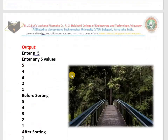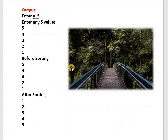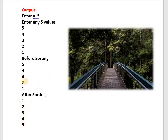See the expected output. Whenever we run the program, the software will ask you to enter the value of n — that means how many values you want to enter, say 5. Enter any 5 values in any order. Those values will be stored in an array and will be displayed as-is, in the same order entered by you — that is what we call before sorting. Then the program will arrange the numbers in ascending order and show them on the terminal after sorting. We get values both before sorting and after sorting.